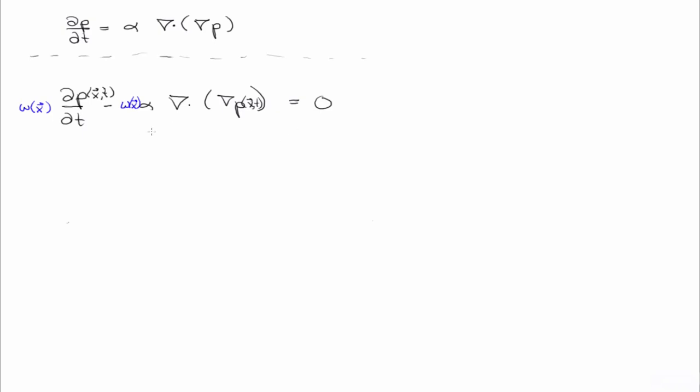Now this equation holds pointwise for any point in a body, right? So if we have a sort of two-dimensional domain omega, this equation holds at this point, and it holds at this point, and it holds at this point. And in fact, it holds at the infinity of all points. I mean, at every single point in this body, this equation must hold.